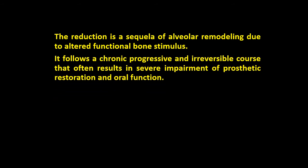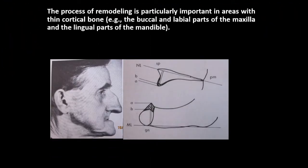The reduction is a sequela of alveolar remodeling due to altered functional bone stimulus, and it follows a chronic, progressive, and irreversible course that often results in severe impairment of prosthesis function. The remodeling process is particularly important in areas of thin cortical plate, such as the buccal and labial parts of the maxilla and the lingual part of the mandible. As a consequence, the mandible looks like an Angle Class III and the maxilla will shrink.